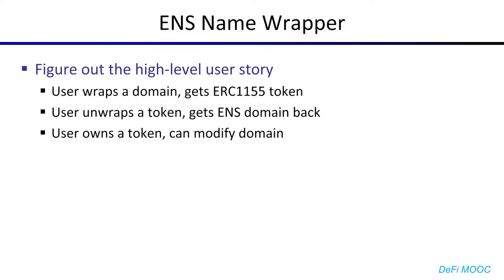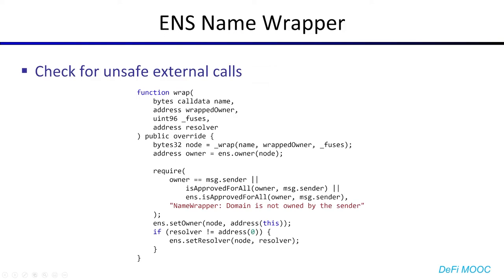Now that we've identified the business logic, it's time to figure out what the high-level user stories are. In this contract there are a few: a user wraps a domain and receives a token in return, a user unwraps a token and gets the domain back, or a user owns a token and can modify the domain as they like. Now that we understand how the contract works, it's time to start checking for vulnerabilities. Since we're focused on unsafe external calls, let's start with that. Looking inside NameWrapper, we can see some external calls being made here, here, here, and here. However, these are not unsafe external calls because we can verify that the ENS contract is trusted.